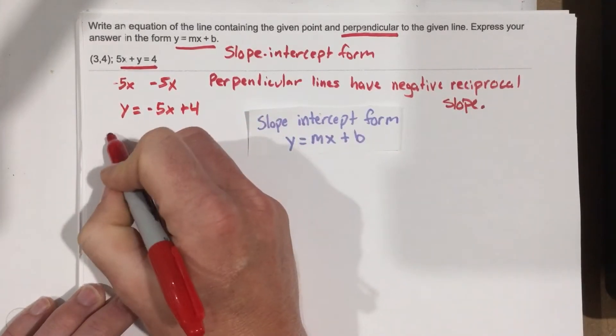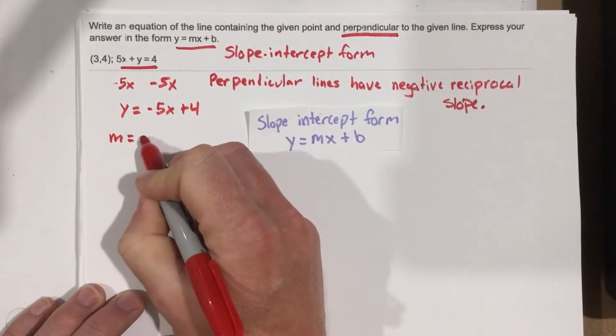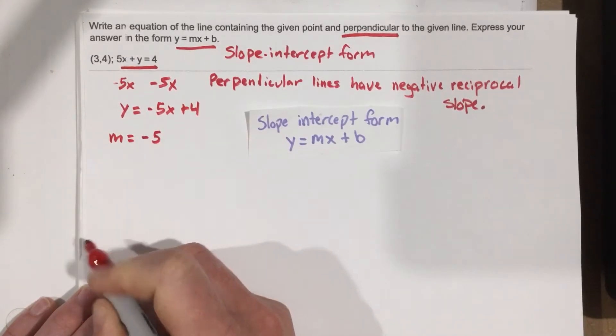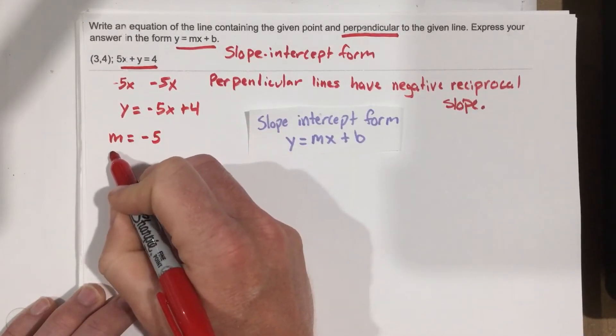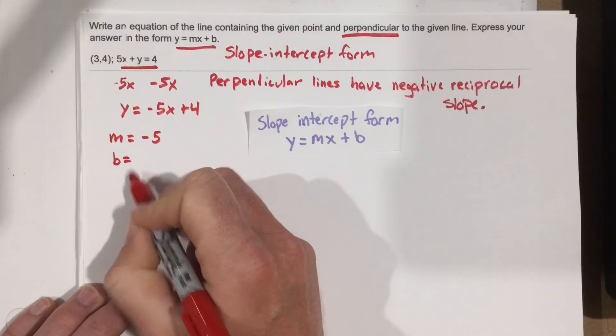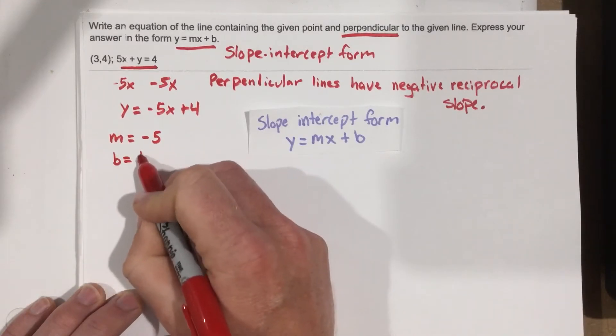Now I know my slope for this equation is negative 5 and my y-intercept, b, is 4.